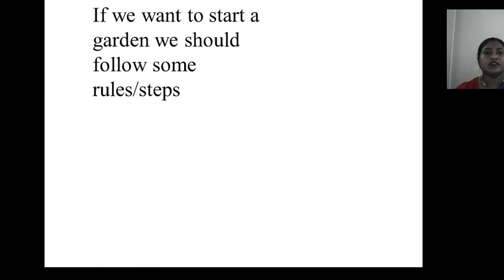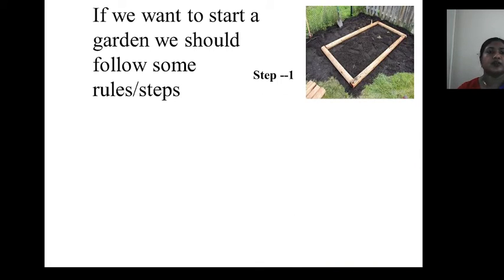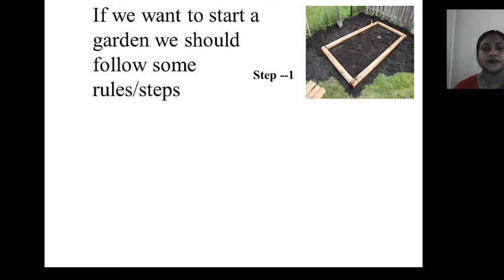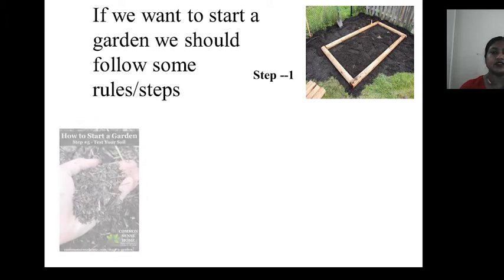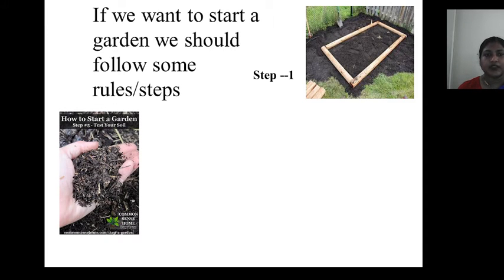If we want to start a garden, we should follow some rules or steps. In Step 1, this is selecting land — if we want to start a garden, at first we have to select a plot of land. Then next is the soil test: we check which plant is appropriate or suitable for which land, so we have to do a soil test. Step 2.